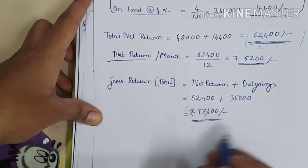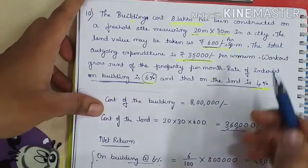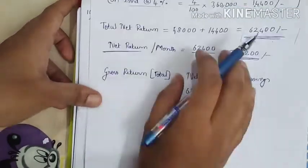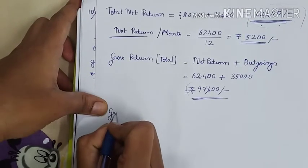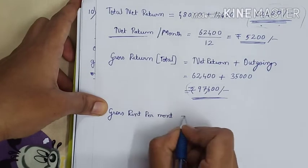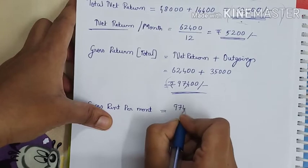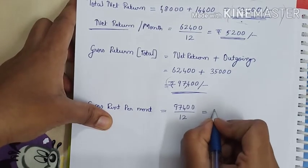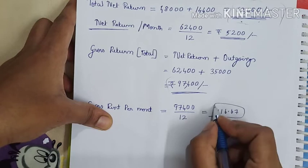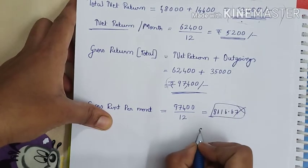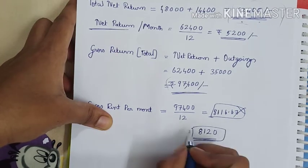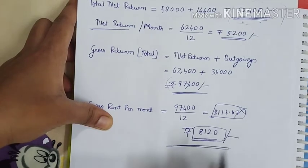This is the annual gross value. They asked for the gross rent per month, so gross rent per month is 97,400 divided by 12, which equals 8,116.67. We cannot express money values as fractions, so we round it off to 8,120. This is the gross rent of the property per month.